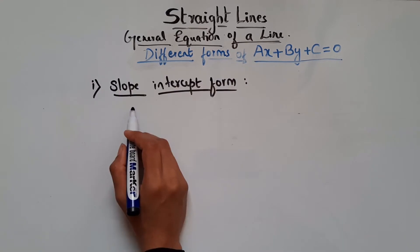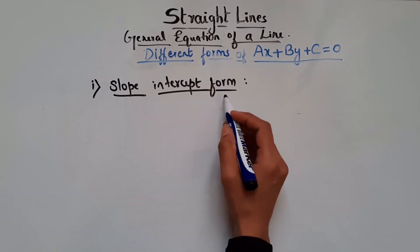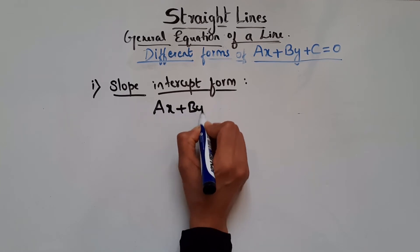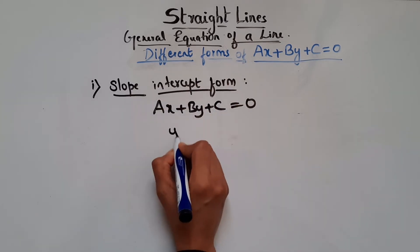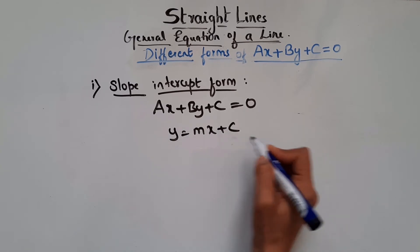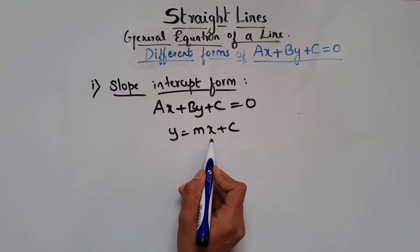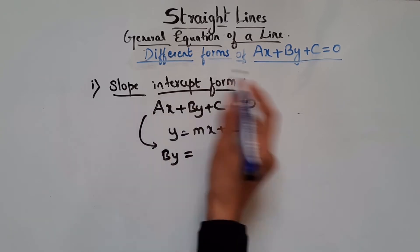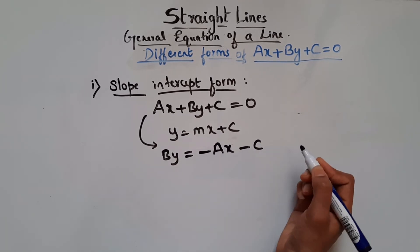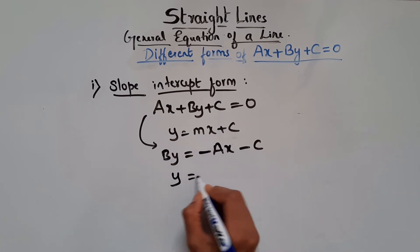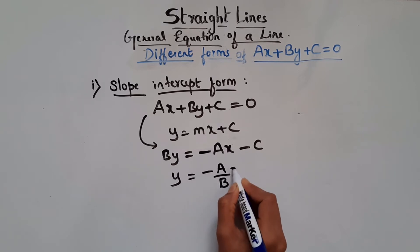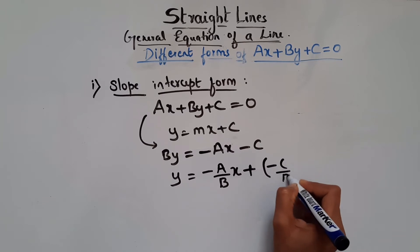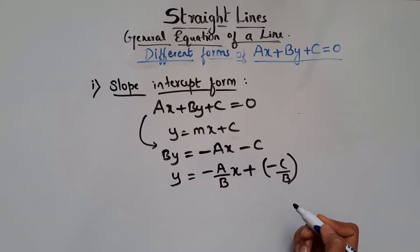Let's see the first method: slope-intercept form. We take the general equation AX plus BY plus C equal to 0, and we know slope-intercept form is y equals mx plus c. To reduce the general equation to this form, we rearrange: BY equals minus AX minus C, and dividing by B gives y equals minus A over B times x plus minus C over B.